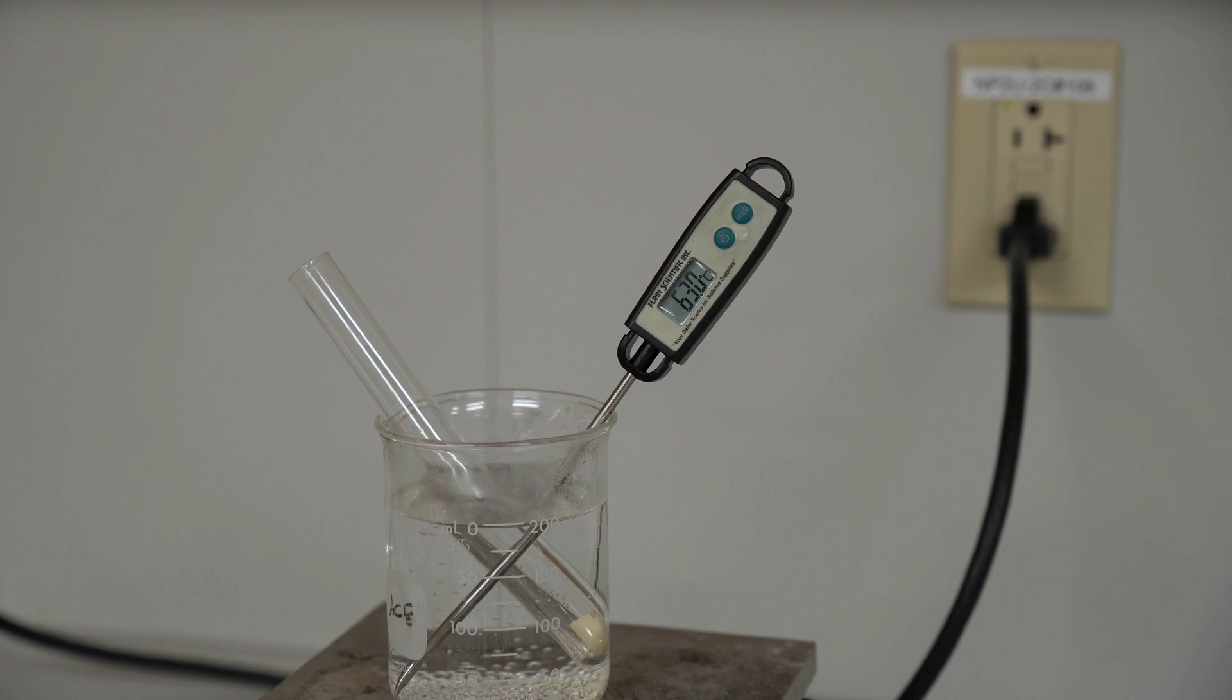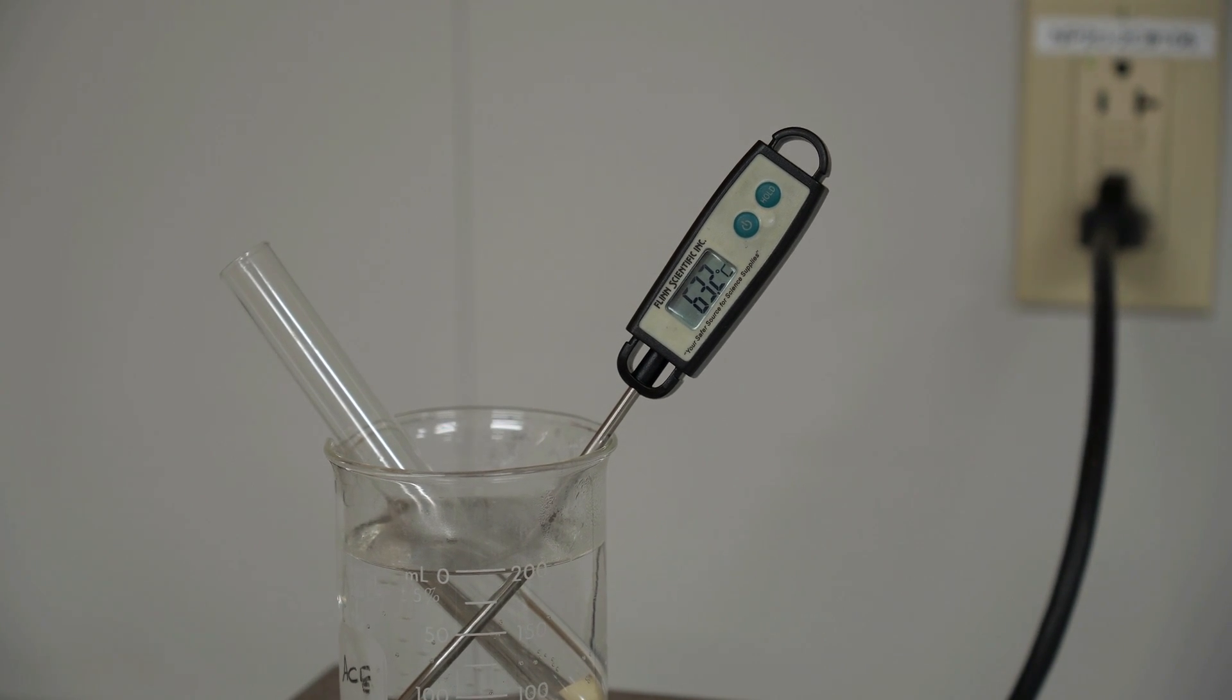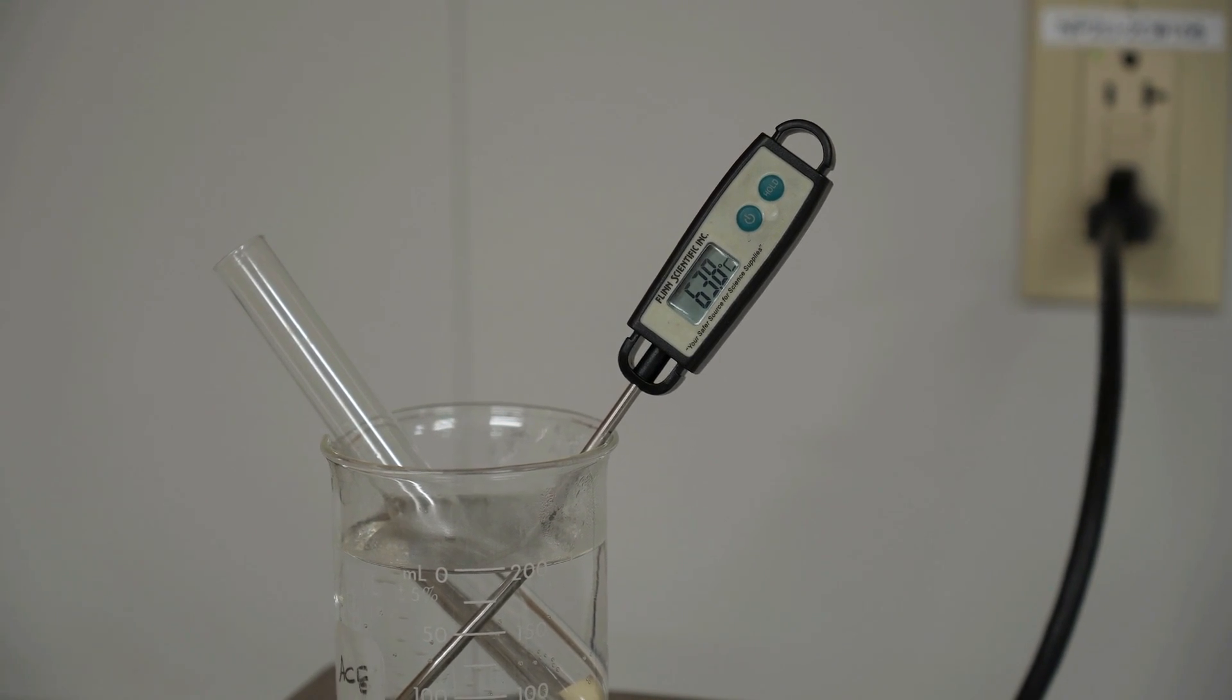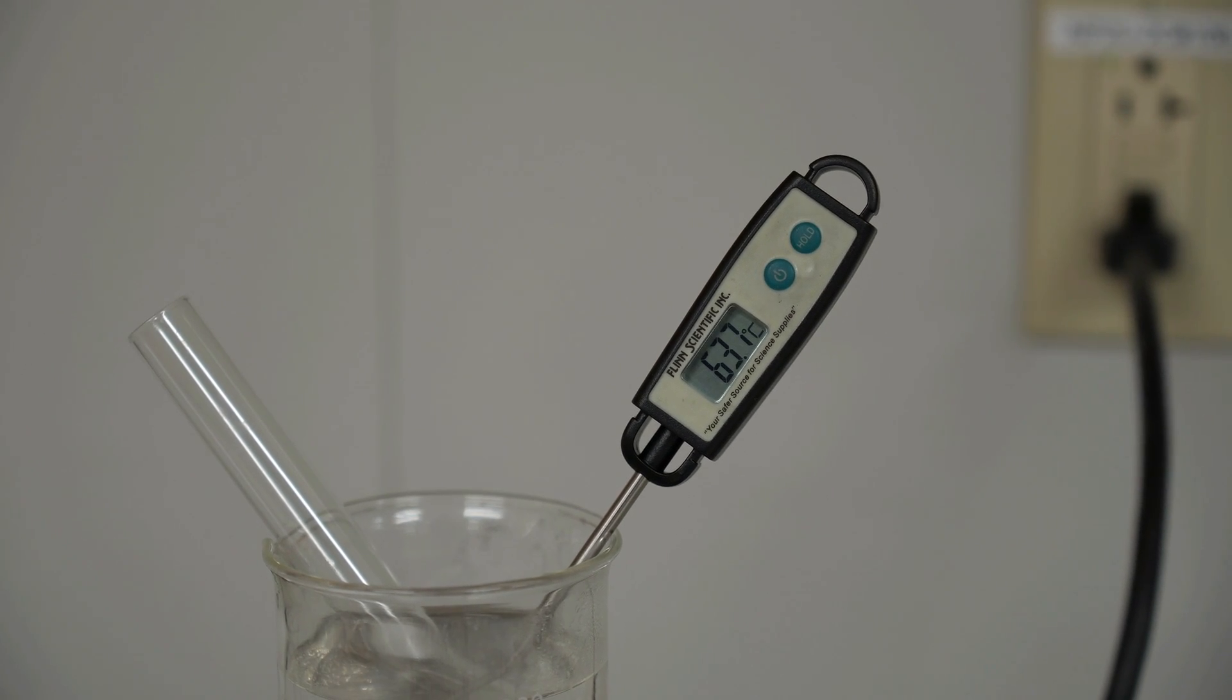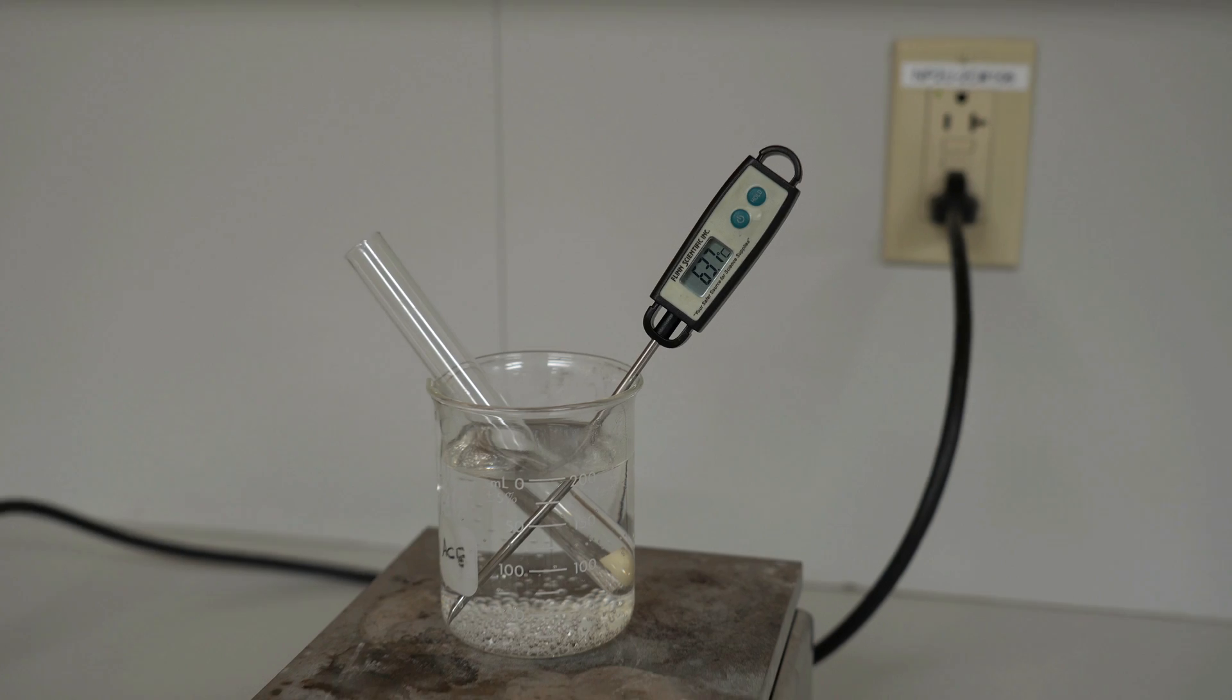We're going to let this sit for approximately five minutes or so, just to ensure the potato chunk is fully exposed to that temperature. Just under 64, at 63.7 degrees Celsius is where it has settled out. This is our warm water bath.